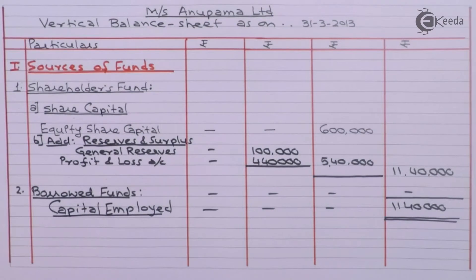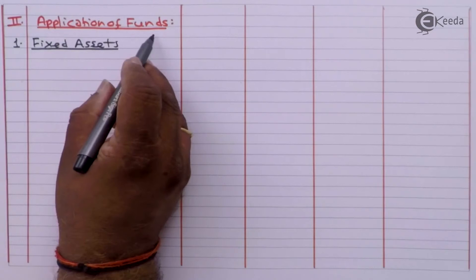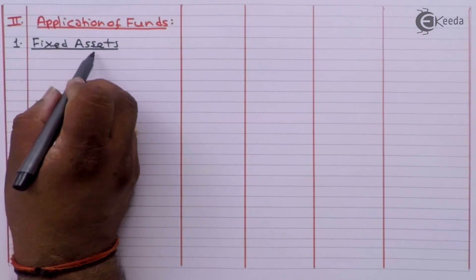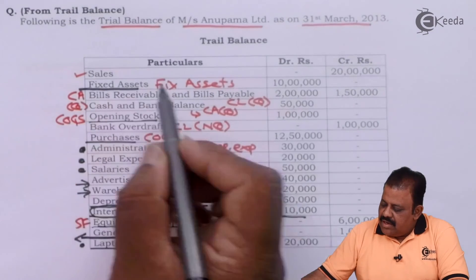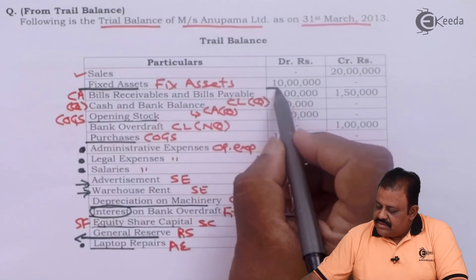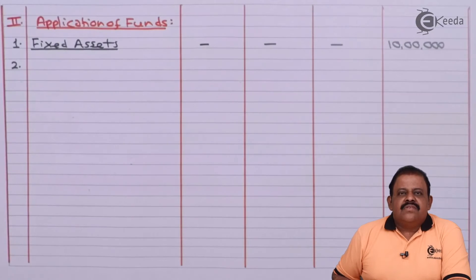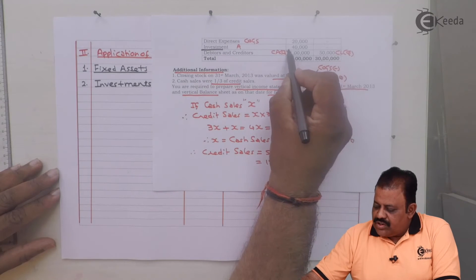Second part of the balance sheet is application of funds. First item: fixed assets — amount is 10 lakhs. Next comes long-term investments: 40,000.